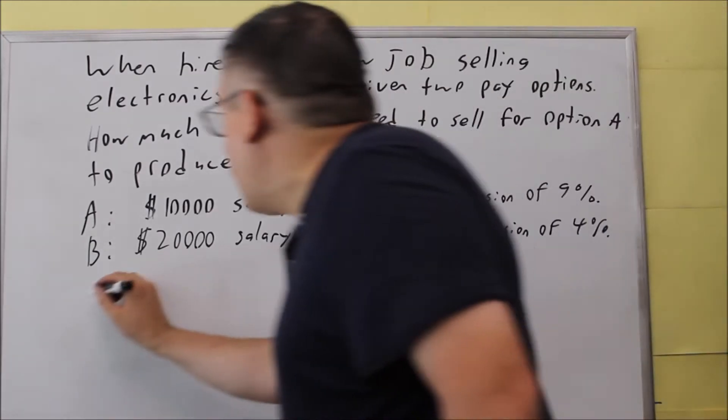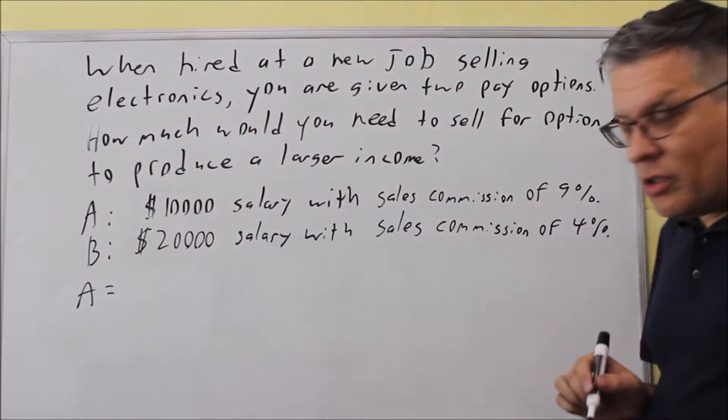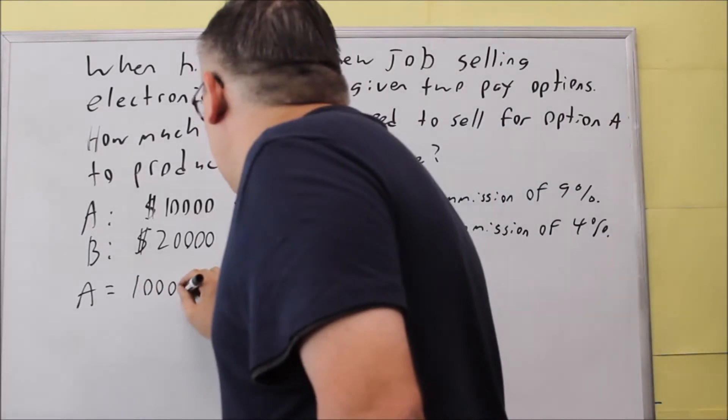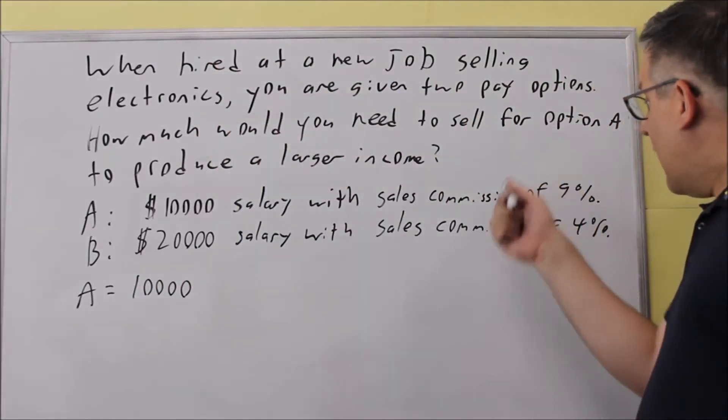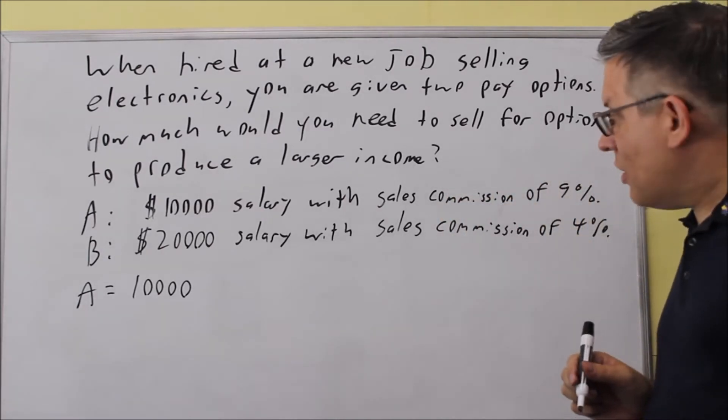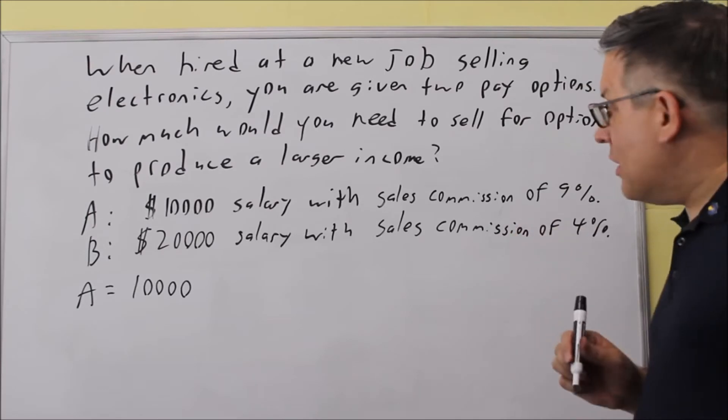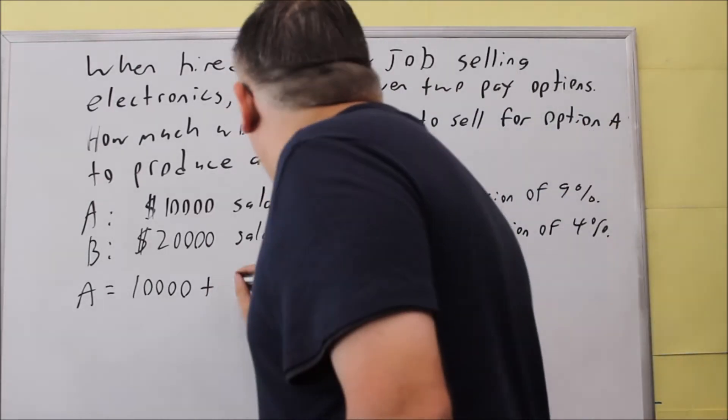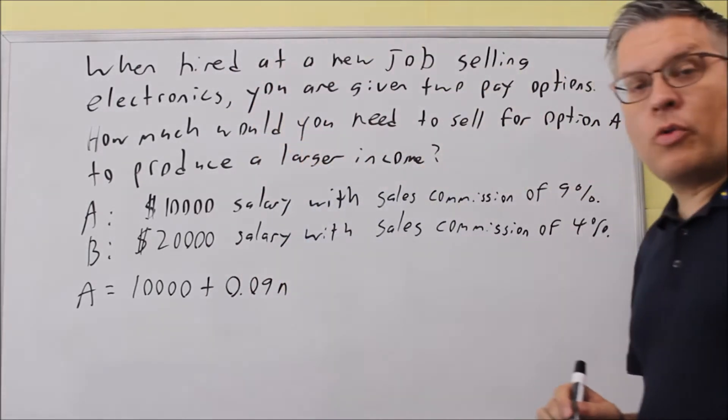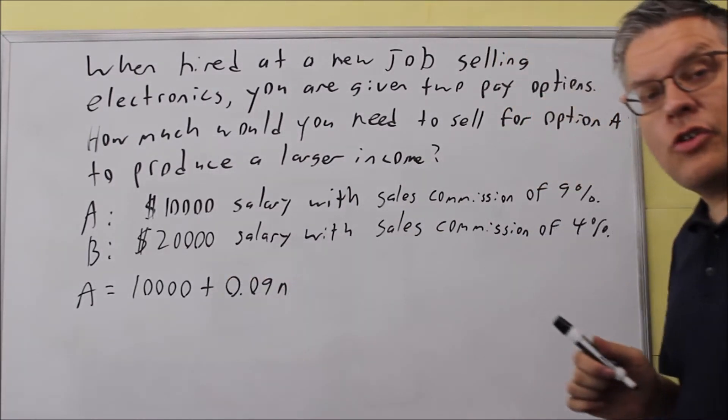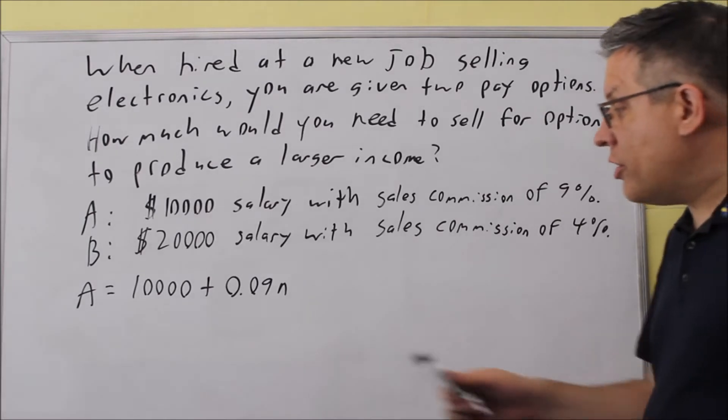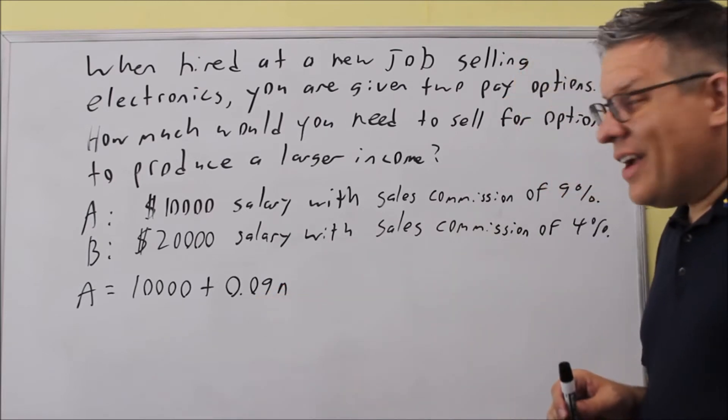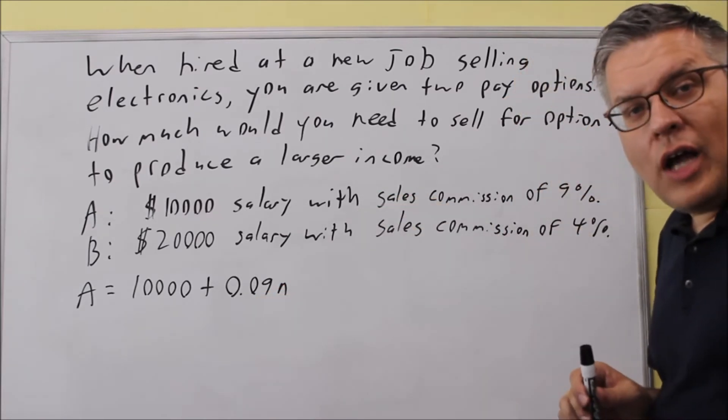Now let's go ahead and set up the formula. I'm going to use A for an amount. So the amount that I'm going to get for option A, I'm going to get $10,000 no matter what, but then I get this variable part, this commission. I'm going to let the letter n represent the amount of sales. So that's 10,000 plus, remember whenever you do the percent you have to write it as a decimal, so 0.09n. Nine percent as a decimal is 0.09.